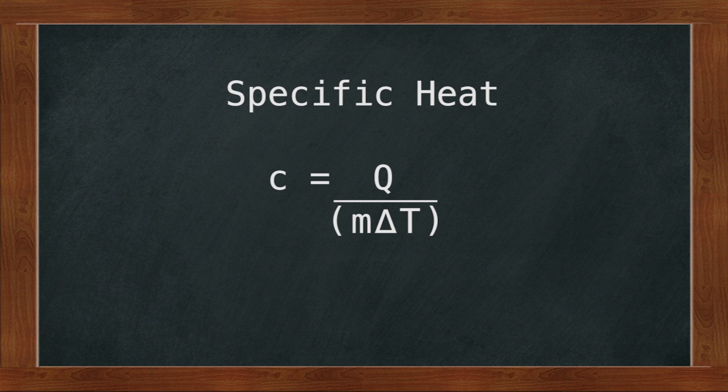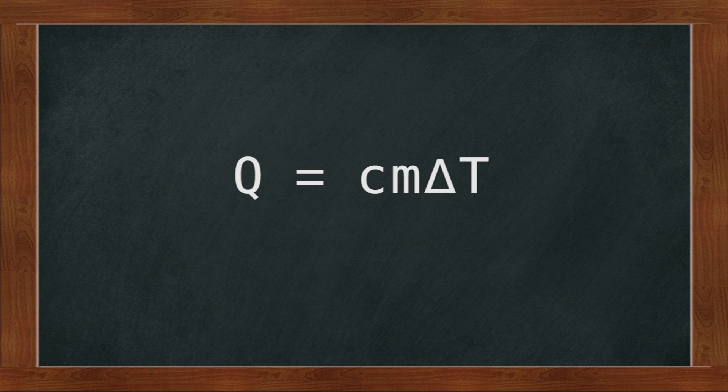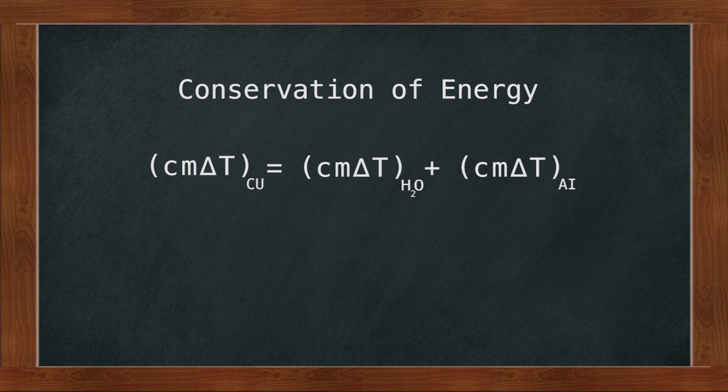However, let's return to our expression for specific heat, C, and do some algebra to write an expression for the heat energy, Q. We have C equals Q divided by quantity M times delta T. Multiplying both sides by M delta T gives Q equals C times M times delta T. The values for C, M, and delta T are all either known or are measurable quantities, and when multiplied, they equal Q. Now, we will return to our conservation of energy equation and substitute our expression for each Q.